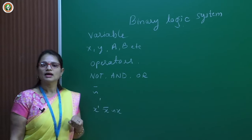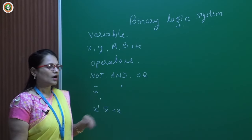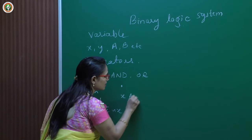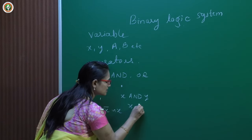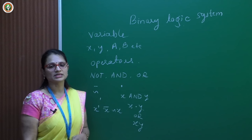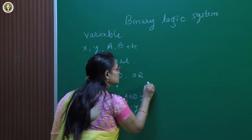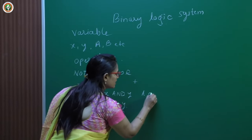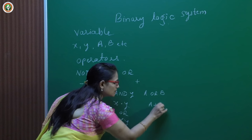The AND operation is represented by a dot. For example, x AND y is written as x·y, or sometimes we eliminate the dot and write it simply as xy. The OR operation is represented by a plus sign. So a OR b is written as a + b.